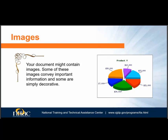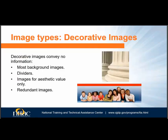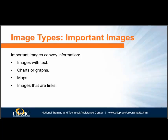Now let's discuss images. Images make documents more interesting. Some images are used to convey information, like a pie chart, while others are just decorations, like a border image. Decorative images convey no information — it won't matter if a blind person using a screen reader knows they are there or not. Important images, on the other hand, are images that present information. A blind person using a screen reader needs to know what is in the image in order to have the same information that a sighted person has.